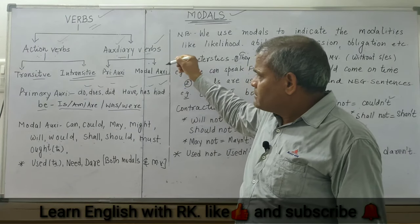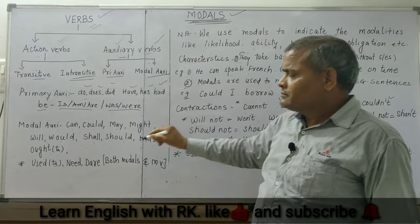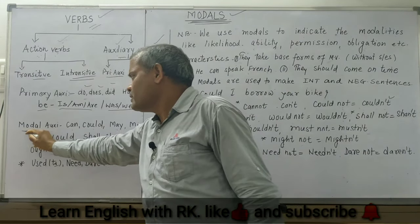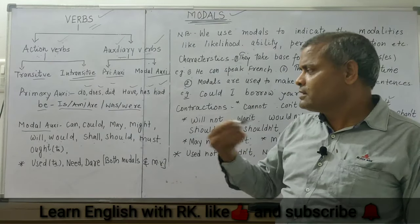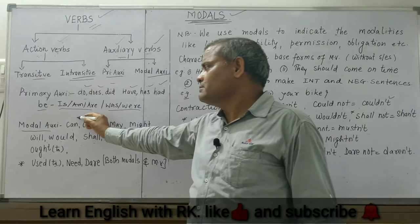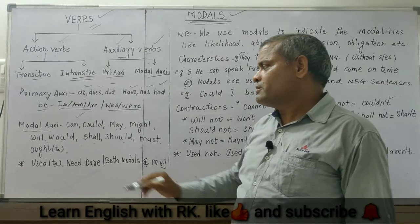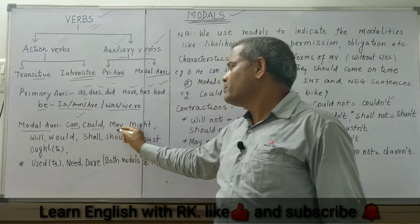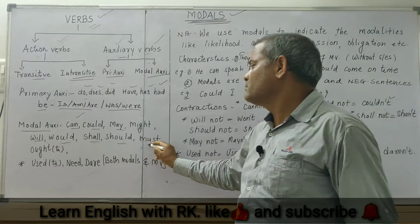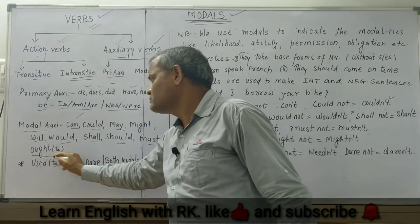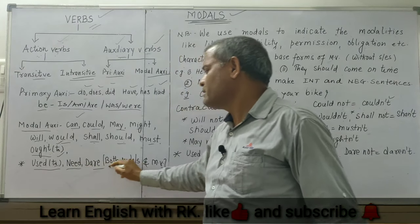And the second type of auxiliary verb is modal auxiliary. So, the modal auxiliaries are now 13 in number. What are they? Can, could, may, might, will, would, shall, should, must, ought to, used to, need, dare.